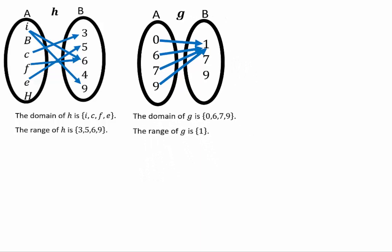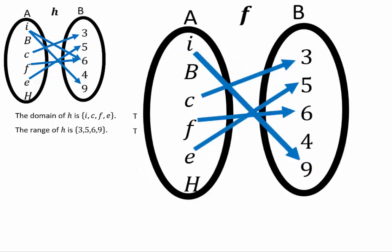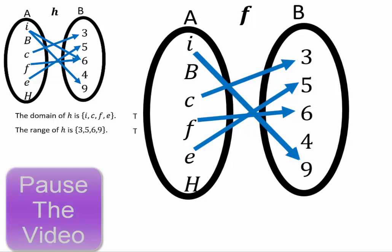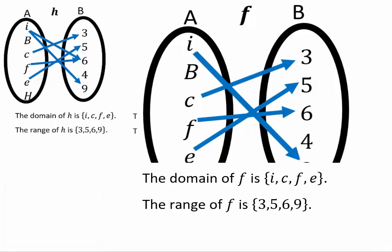Let's look at another relation, let's say f. So in this f relation, pause the video, find domain and range and let's see what you got. So here the domain would be i, c, f, and e, and the range will be 3, 5, 6, and 9.